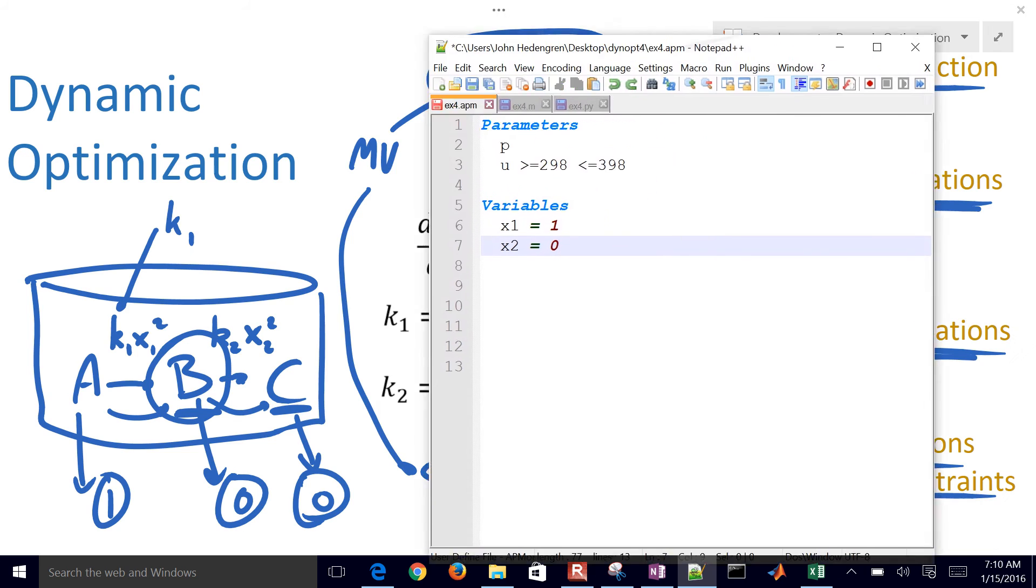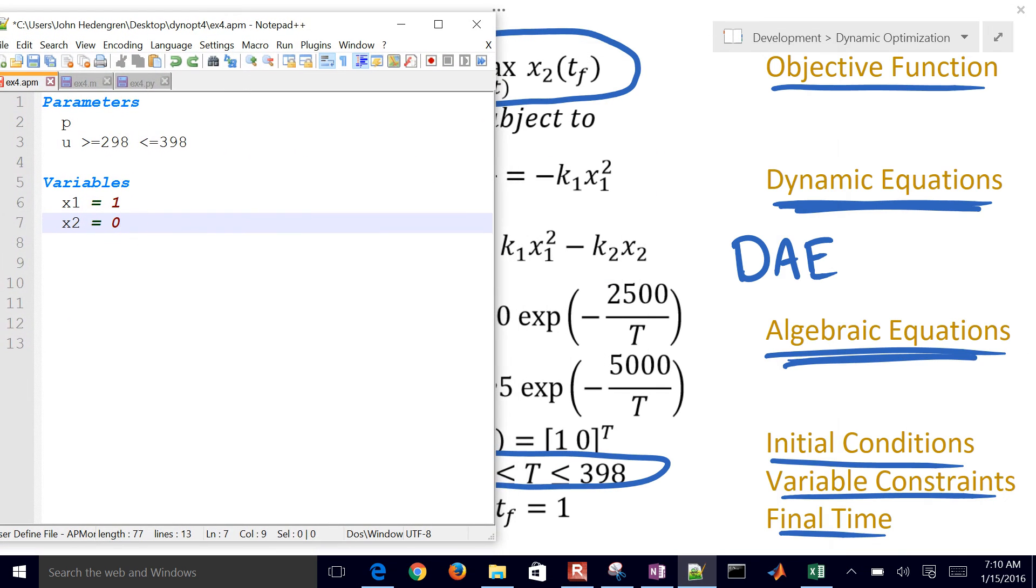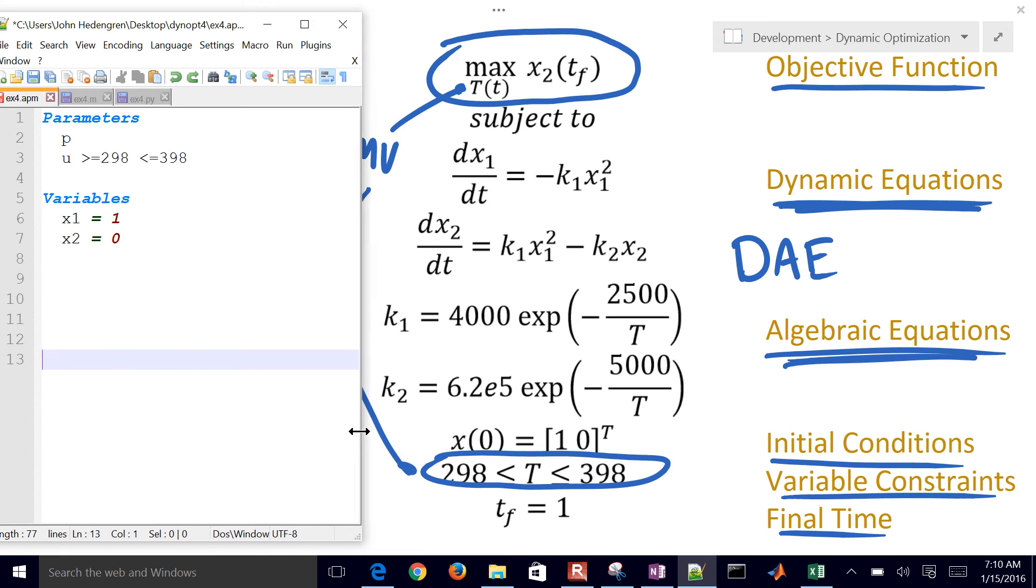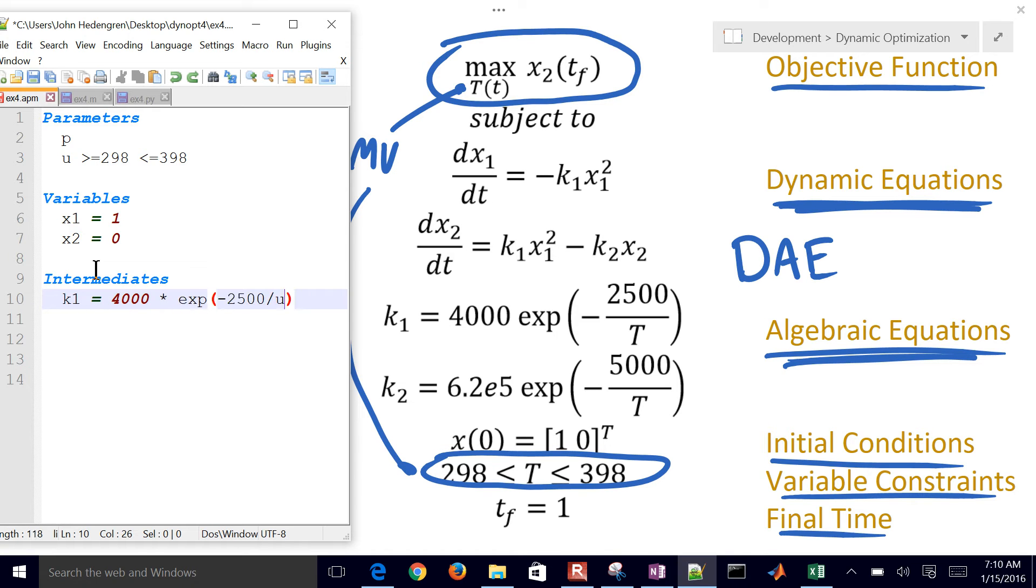Let me just put this over here as I build this so that we can see this as we create this file. So I have some intermediate equations. I have K1 is going to be equal to 4,000 times the exponent of negative 2,500 divided by the temperature, and then do the same thing for K2 as well.